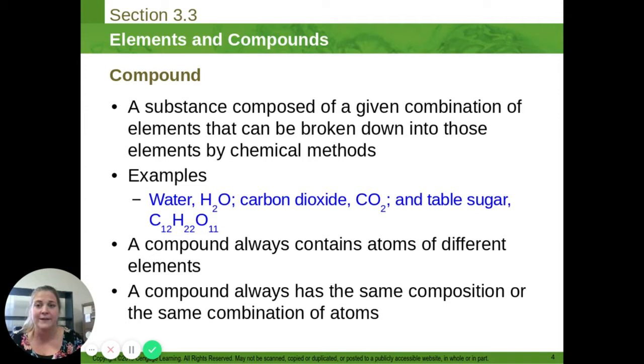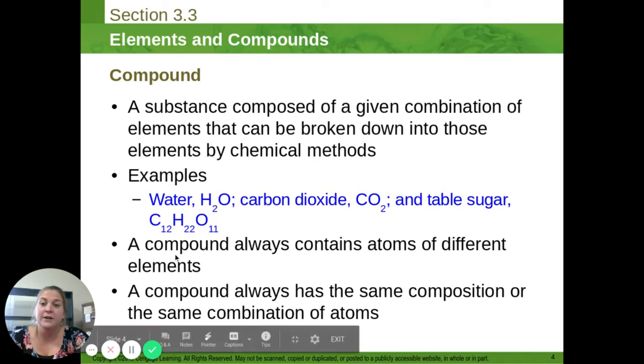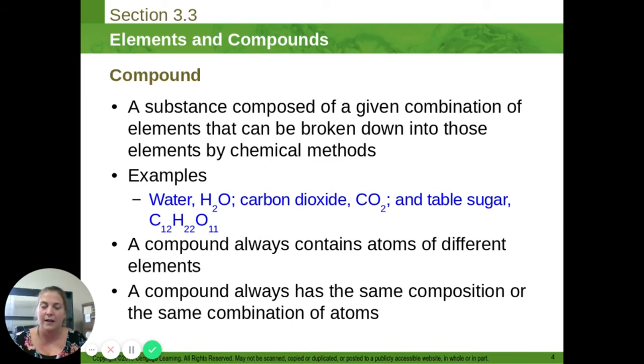Whereas a compound by definition is something that is made up of more than one element chemically combined. Any combination of elements that are chemically bound together. For example, water, and we know water is a compound because when you look at its formula H2O, you can see that there are two hydrogens and one oxygen in every molecule of water. Carbon dioxide CO2, sugar C12H22O11. That's going to have a lot of elements in it.